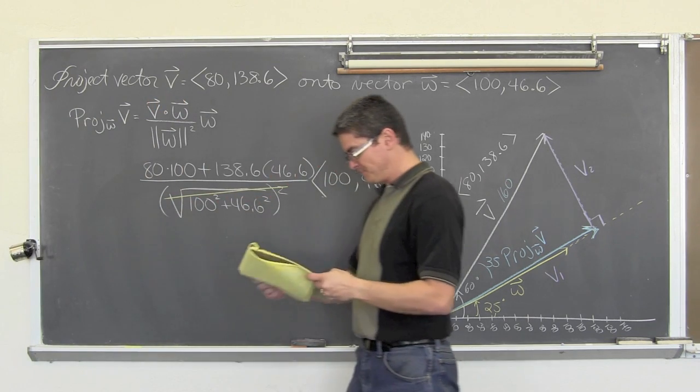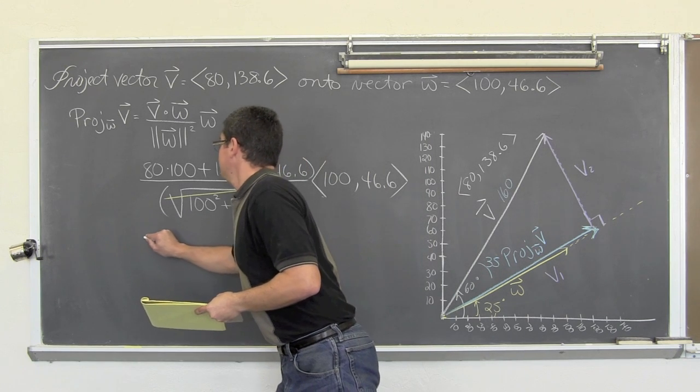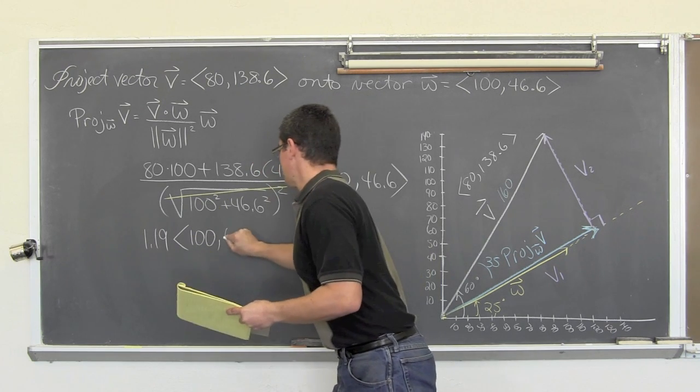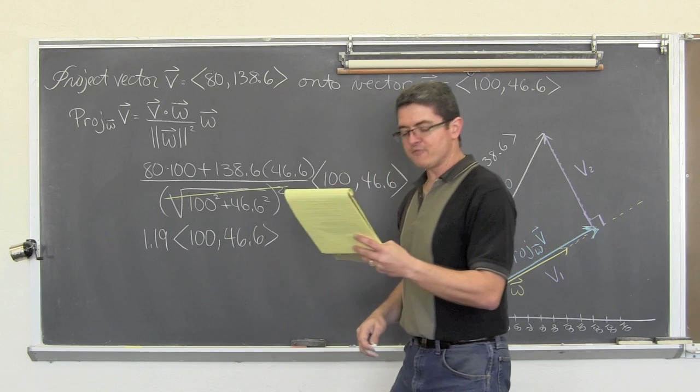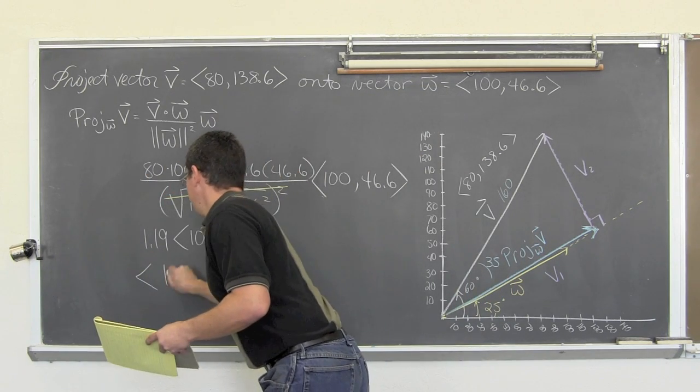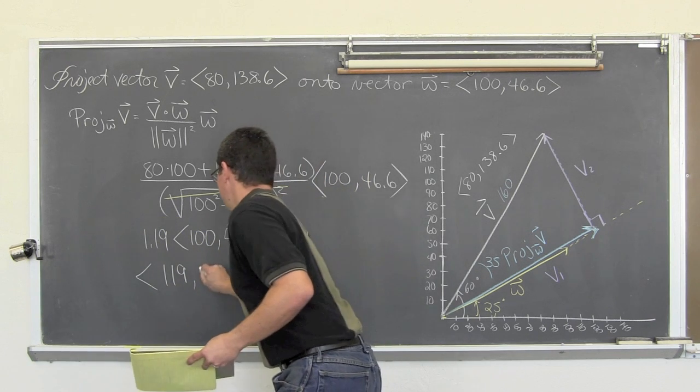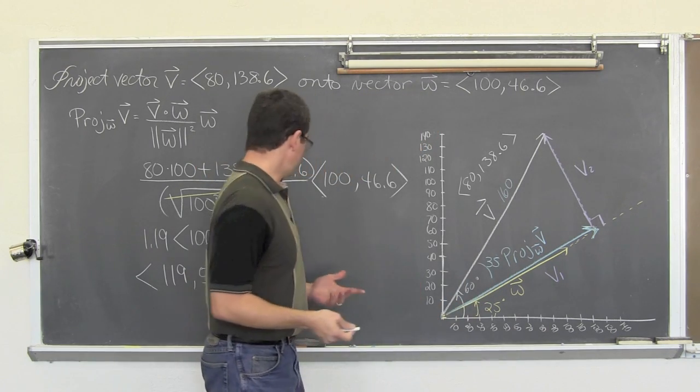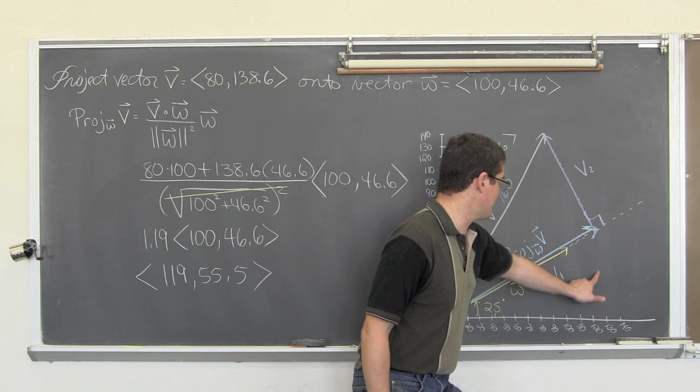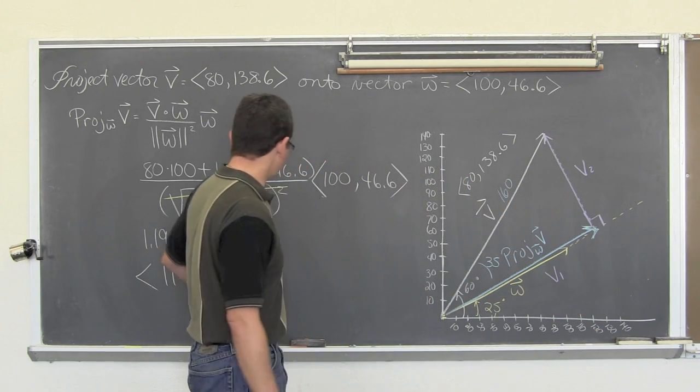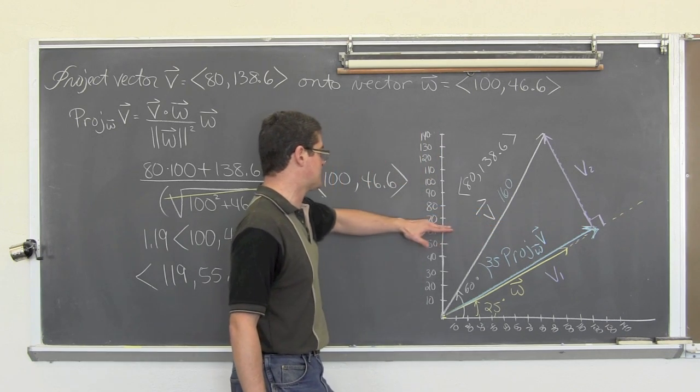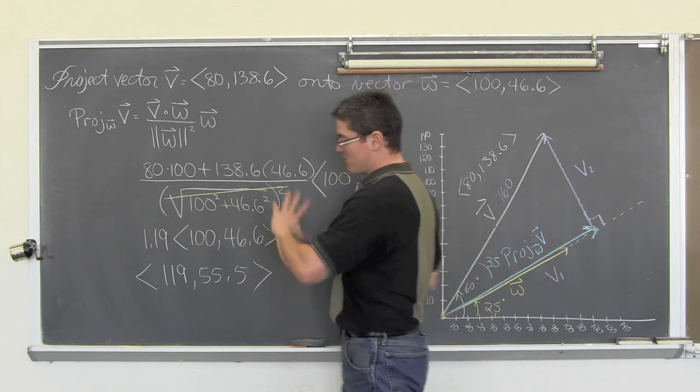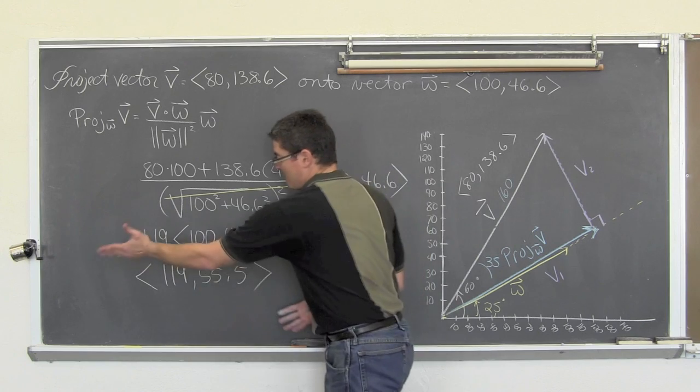So, all of this comes out to be 1.19 times the vector which is, as stated, 100, 46.6. And, that final vector becomes 119 and 55.5 basically. And, you can stick an i and a j there as well. My vector, my projected vector, my drawing is pretty much over 120. And, the y value of 55 or the b value of 55 is... So, my drawing is fairly accurate. Now, if I want that force of this vector... Actually, no, excuse me. I just want to do the projection. So, that is it. Boom. That is the projection.